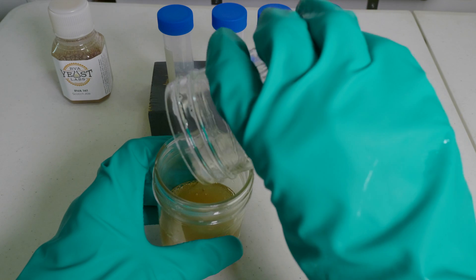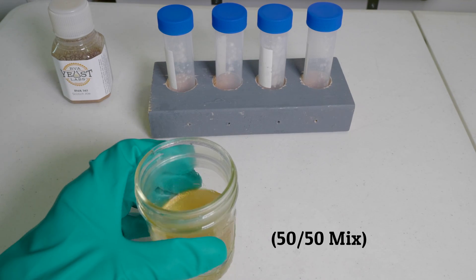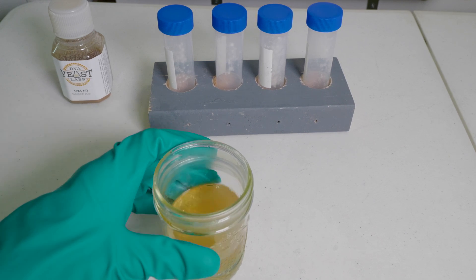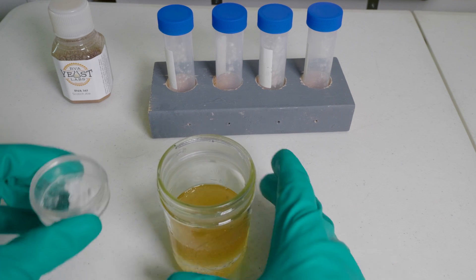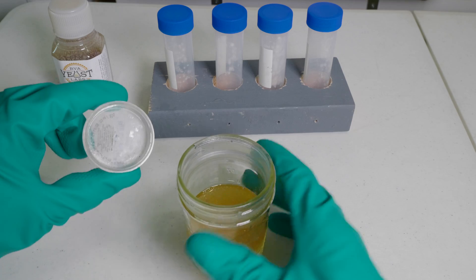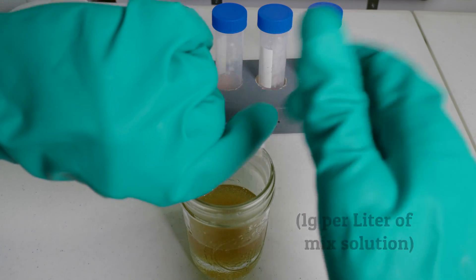I'm adding the wort to the glycerin. This is a 50-50 mix. In this case, it was 100 milliliters of wort and 100 milliliters of glycerin. I'm going to add the ascorbic acid. This is 1 gram per liter, which ends up being a pretty small amount.